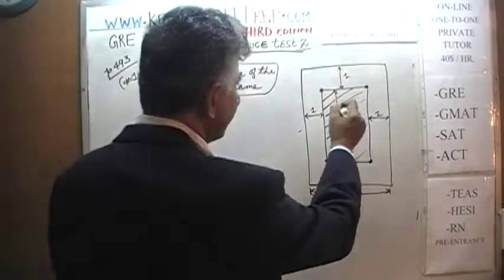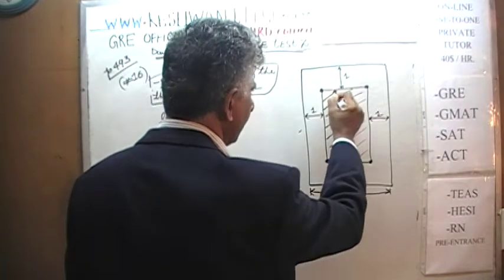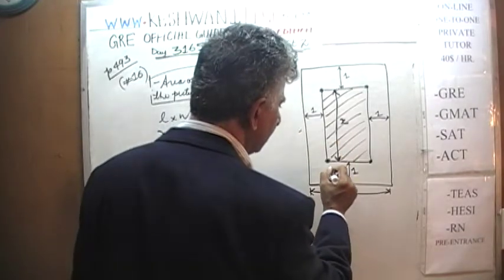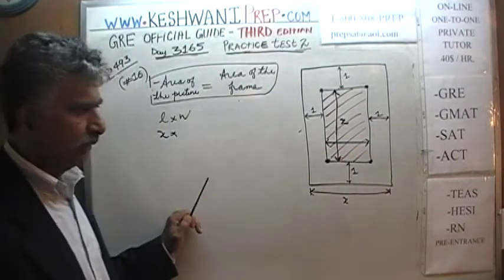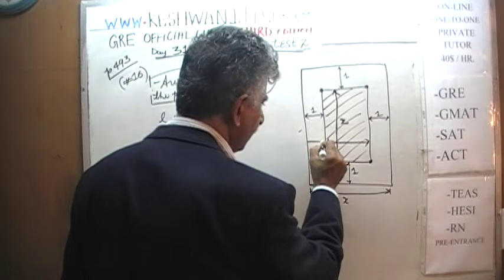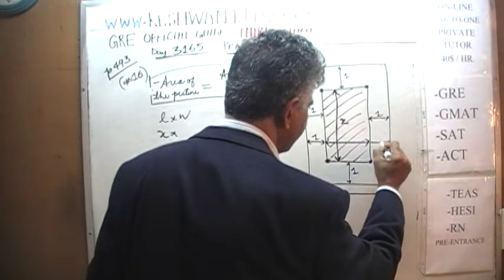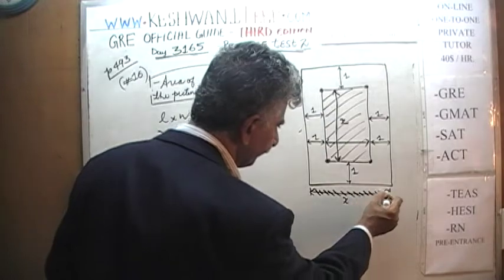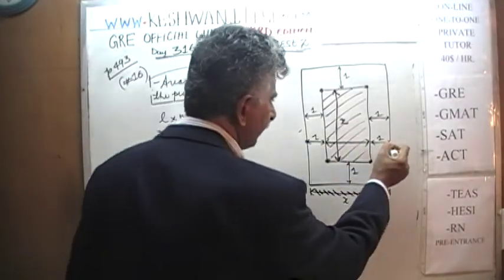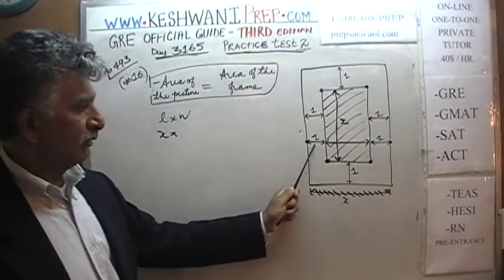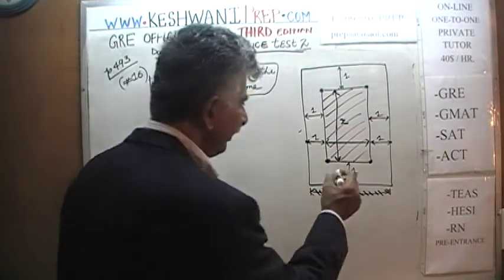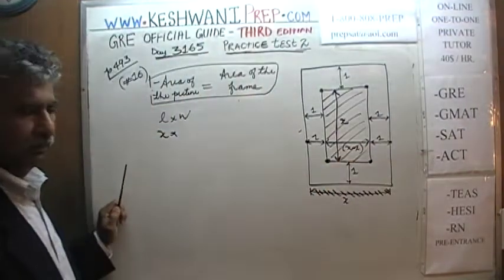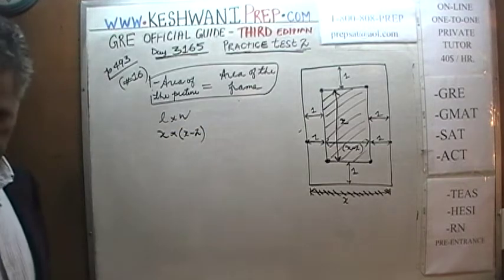The length of the picture is X inches. For the width: the full frame spans X inches across, but there is 1 inch of frame on each side, so the width of the picture must be X minus 2 inches. Therefore, the area of the picture equals X times (X minus 2).